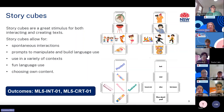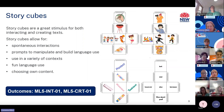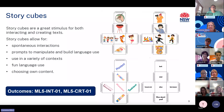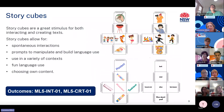Now we'll move on to our second activity: Story Cubes. Story cubes are used to provide stimulus for interacting and creating text activities. They can be used by students individually or in small groups and may have themes such as activities, time words, conjunctions and adjectives — in fact anything that sparks an idea or discussion point can work. Story cubes allow for spontaneous interactions, prompts to manipulate and build language use, use in a variety of contexts, fun language use, and choosing own content.